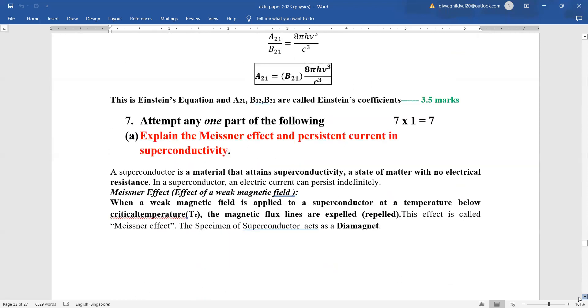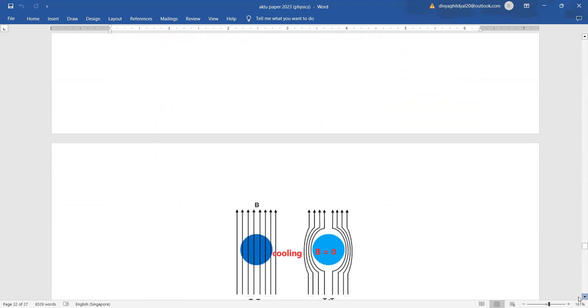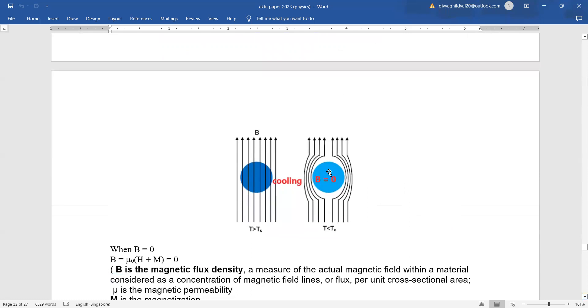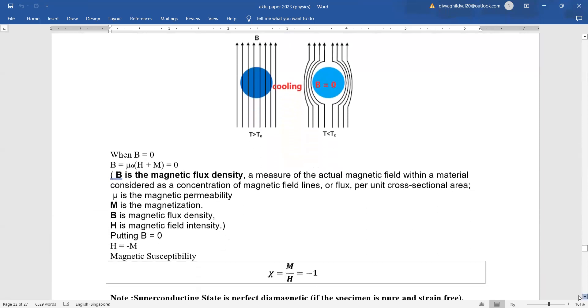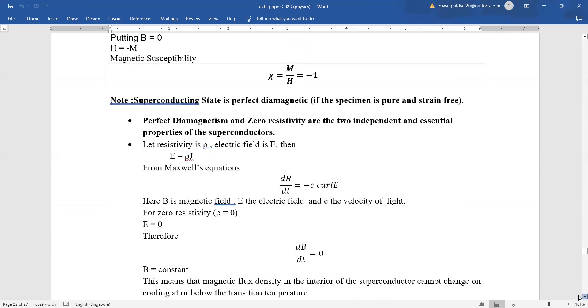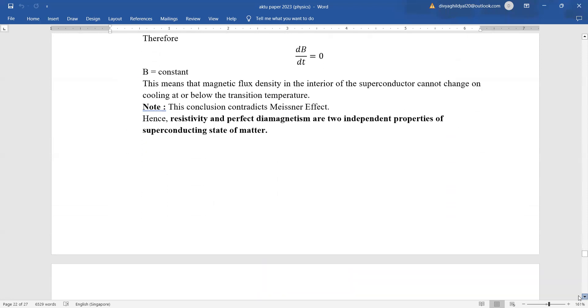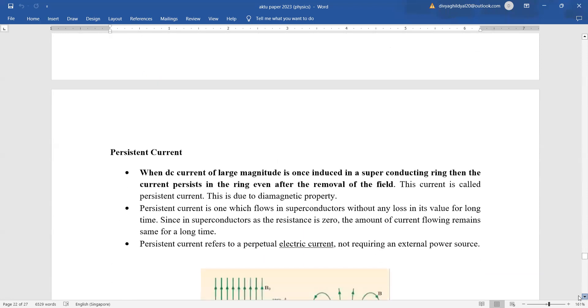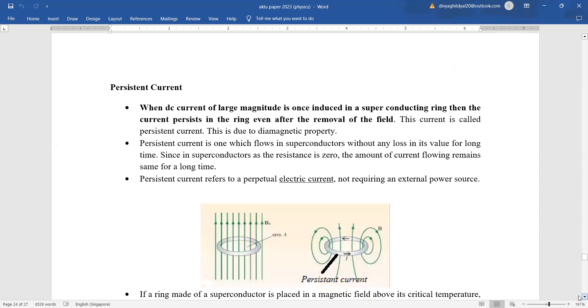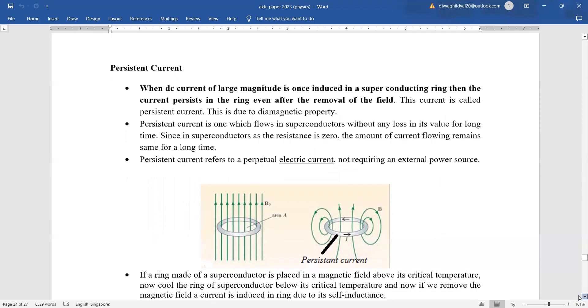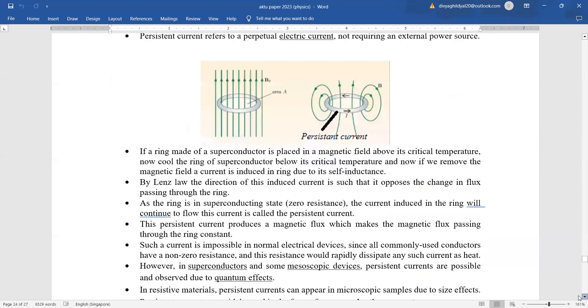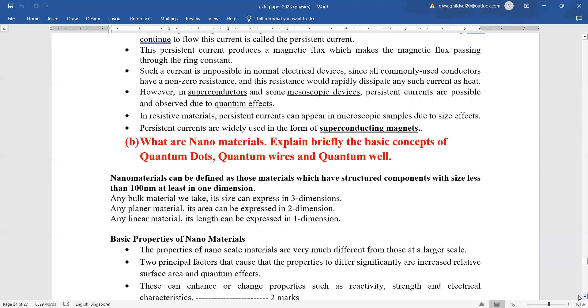Meissner effect and persistent current and superconductivity where you have to show that electromagnetic lines of force are repelled from inside because of the diamagnetic nature of the superconducting material. Then you have to explain persistent current. That is current of large magnitude is induced in the superconducting ring. Then the current persists in the ring even after removal of field for some time. This is known as persistent current.